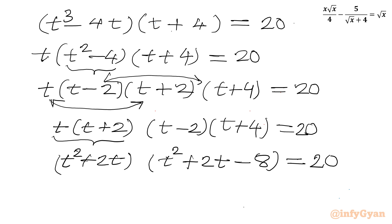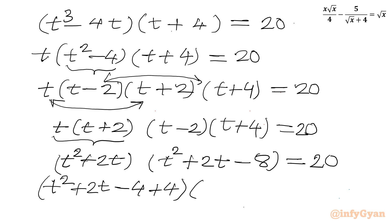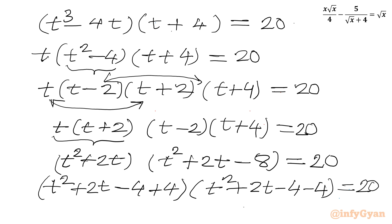Now I will use a manipulation step. I write the first factor as (t² + 2t − 4) + 4 and the second factor as (t² + 2t − 4) − 4. So if we let a = t² + 2t − 4 and b = 4, the product becomes (a + b)(a − b) = a² − b², giving (t² + 2t − 4)² − 16 = 20.